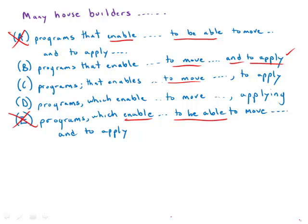To move, comma, to apply. There's something a little bit funky about that. We're going to go back to that. To move and then applying. That's definitely a failure of parallel structure. Those two are not parallel. So D is out.